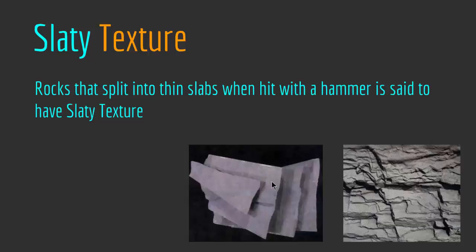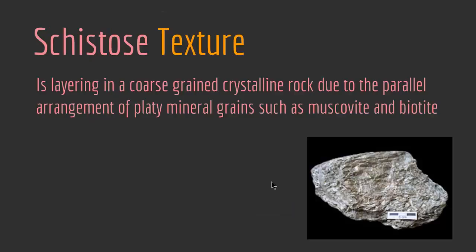The other kind of foliated texture is schistose texture. Schistose texture is a layering in a coarse-grained crystalline rock due to the parallel arrangement of platy mineral grains such as muscovite and biotite. Other minerals may also be present, typically quartz and feldspar, plus a variety of other minerals such as garnet, staurolite, kyanite, and sillimanite, that give the rock its schistose texture. As you can see in this schist specimen, the platy micas have arranged themselves in a parallel way to create this characteristic schistose texture.